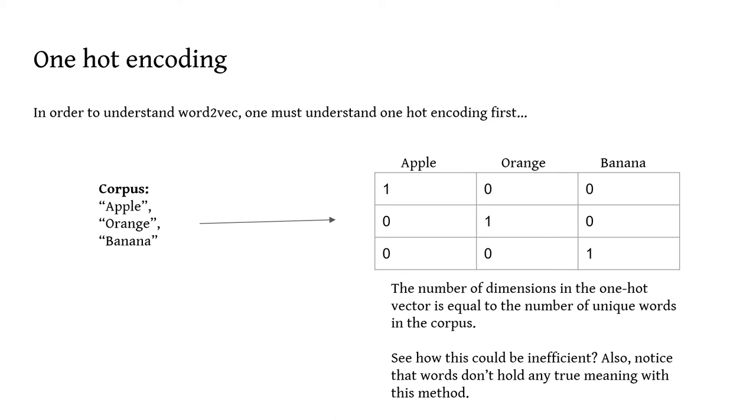So first we have to discuss one-hot encoding. Now one-hot encoding is a way to represent words using one-hot encoding vectors. One-hot encoding vectors don't carry any intrinsic meaning to the words. It simply tells the computer what each word is. It identifies unique words. So in this example here, we have a corpus with three words, apple, orange, and banana. And since there are three unique words in the corpus, each one-hot encoding vector will have three dimensions or three elements. And every element in the vector will have a value of zero except for one. One value will have the value of one. And since each word is unique, each one-hot encoding vector is also unique.